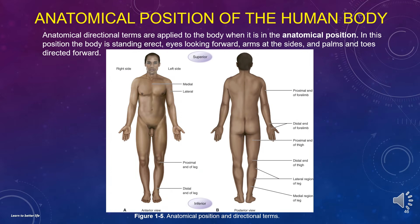Now let's change the topic and learn about the anatomical position of the human body. Anatomical directional terms are applied to the body when it is in the anatomical position. In this position, the body is standing erect, eyes looking forward, arms at the sides, and palms and toes directed forward.